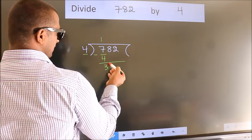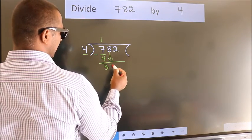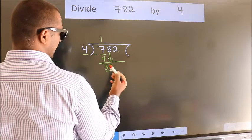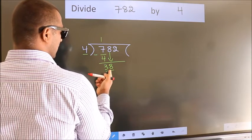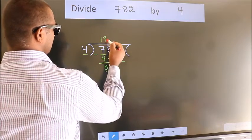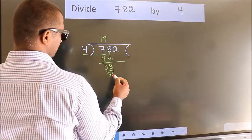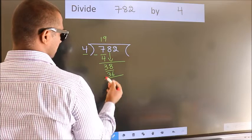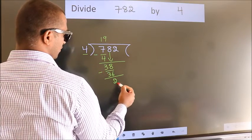After this, bring down the beside number. So, 8 down. So, 38. A number close to 38 in 4 table is 4 nines 36. Now, we subtract. We get 2.